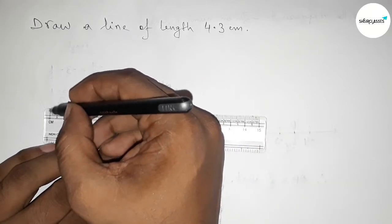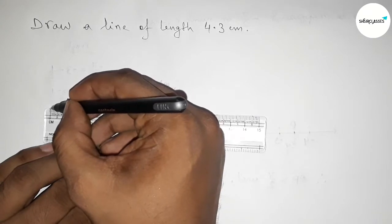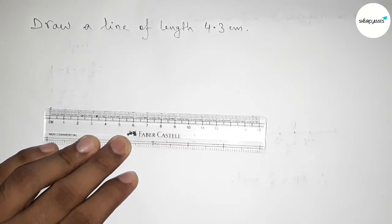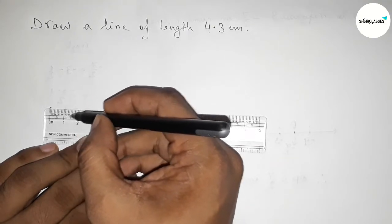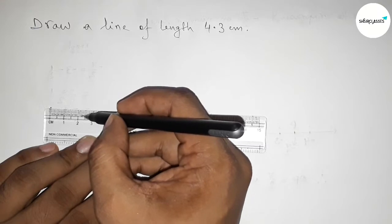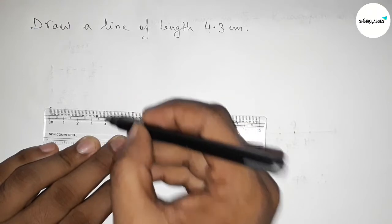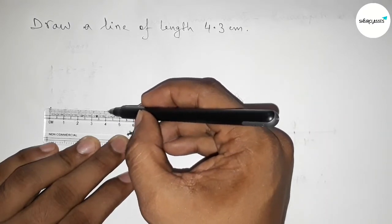This is the starting point at 0. First, mark here at the starting 0. Now counting 4.3: 0, 1 centimeter, 2 centimeters, 3 centimeters, 4 centimeters. Now 4.3, so this is 4 centimeters, 4.1, 4.2, 4.3.